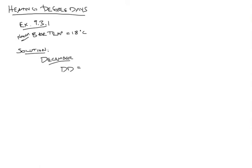Heating degree days are calculated simply by the number of days in the month, and the base temperature, and the month's ambient average temperature. So T ambient bar is T average for the month.